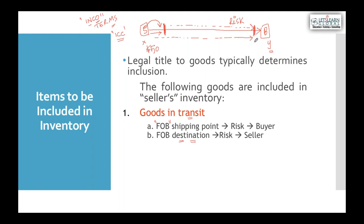Conversely, FOB Destination Point means goods must reach the buyer's place. The supplier is responsible for moving goods all the way from their country to the buyer's destination as specified in the contract. Ownership transfers only at the destination; if anything happens to the goods during transit, the seller bears the risk. In FOB Shipping Point, risk transfers to the buyer at the supplier's shipping point - the buyer becomes owner there.